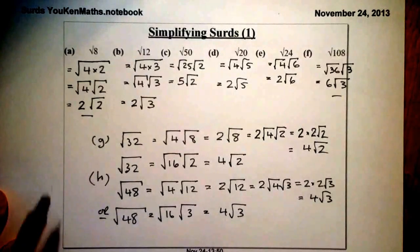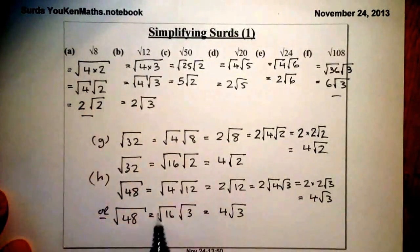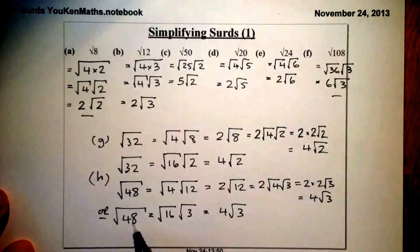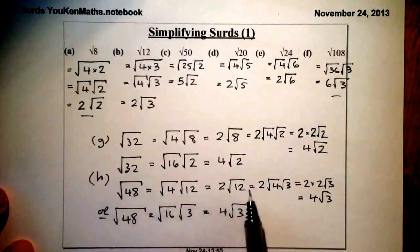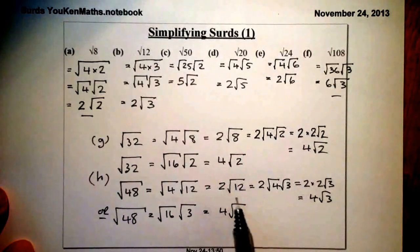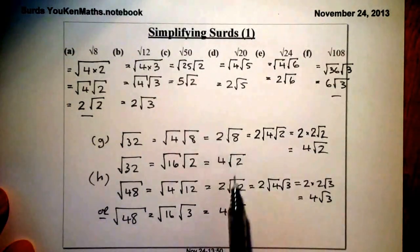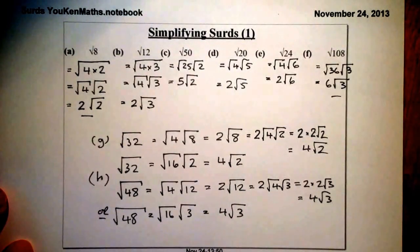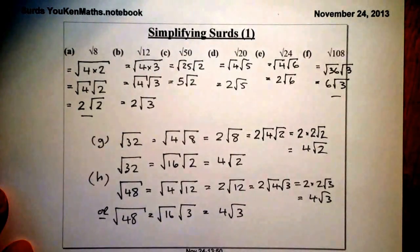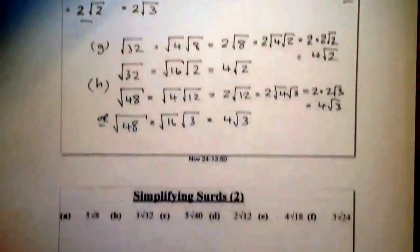Numbers like root 8, root 32, and root 48 are very common questions at National 5 level. The reason is that there's a possibility of leaving the answer in an unsimplified form, and I think that's just to ensure you understand that you can take some roots further to make sure they're totally simplified. Okay, that's simplifying surds — that's part 1. Let's look at part 2.